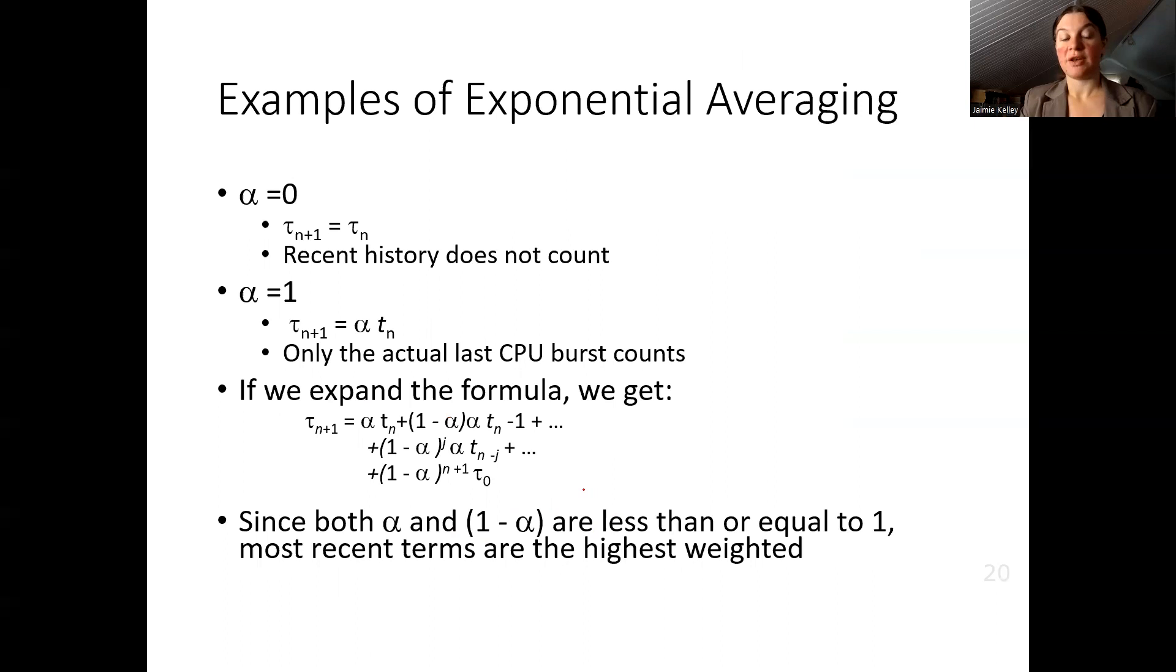Just a couple of notes about the value of alpha. If alpha is 0, then we are saying that our guess is never going to change. It's going to be the same forever. Similarly, if alpha is 1, our previous guesses do not matter and we are taking our estimate directly from the most recent CPU burst.